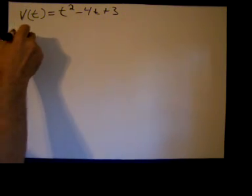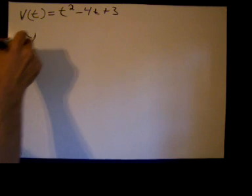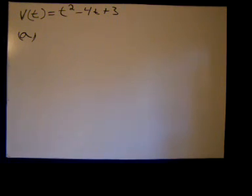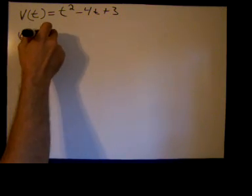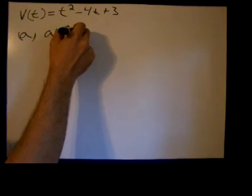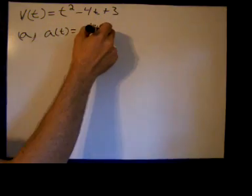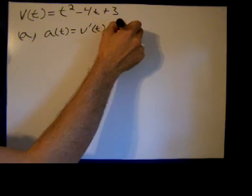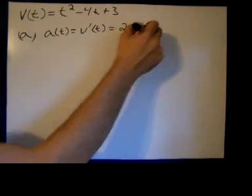So to answer part A, we want to know the body's acceleration each time the velocity is zero. We need acceleration. Well, acceleration is the derivative. So the acceleration is the derivative of the velocity, which is 2t minus 4.